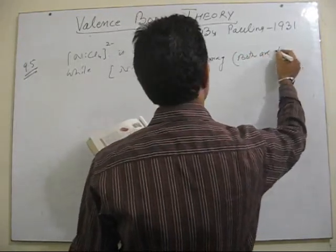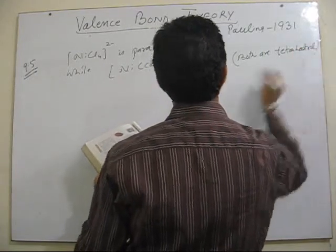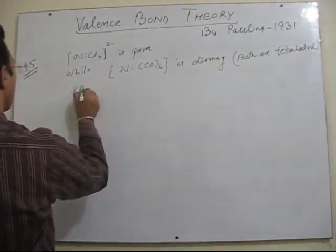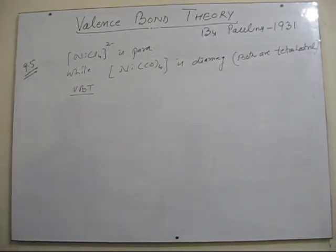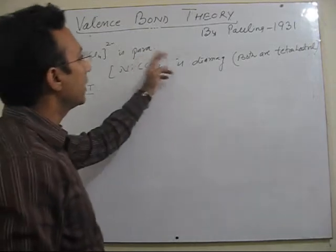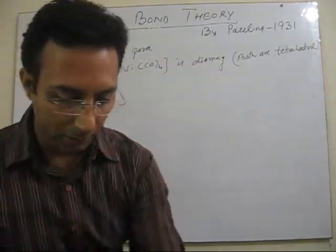So we have to explain this using VBT. Why is it so that both of them are tetrahedral, still one of them is paramagnetic while other is diamagnetic? So let's see what happens here.